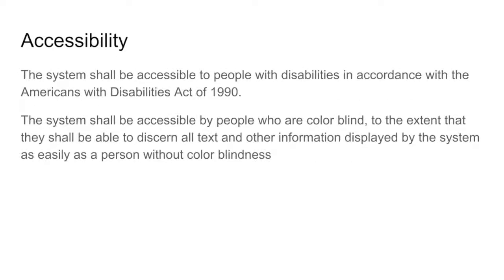Accessibility is an important one within the system. The system needs to be accessible to people with disabilities in accordance with the Americans with Disabilities Act of 1990. Accessibility on websites is becoming more and more a popular topic, as we want to make sure that everybody can view data within our websites even if they have a disability. The system shall be accessible by people who are colorblind, to the extent that they should be able to discern all text and all other information displayed by the system as easily as a person without colorblindness — a key feature, since folks with colorblindness still buy a lot of products online.